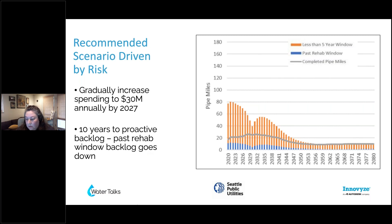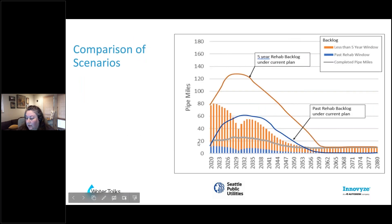Comparing the two scenarios, you can see the budget-driven scenario had about 130 miles of pipe by 2030 that were behind the rehabilitation schedule, but the risk-driven scenario got that down to 40 miles. The same with those that were past their rehab window — it is a drastic change. We were able to keep that under 10 miles.